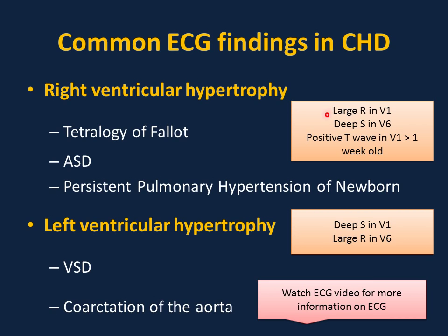Common ECG findings in congenital heart defects: if you see a large R in V1 and deep S in V6, this is indicative of right ventricular hypertrophy (considering upper normal limits for age). A positive T wave in V1 in a child more than one week old is also suggestive of right ventricular hypertrophy. Examples include tetralogy of Fallot, ASD, and persistent pulmonary hypertension of the newborn. If you see a deep S in V1 and large R in V6, this is indicative of left ventricular hypertrophy — classic examples are VSD and coarctation of aorta.